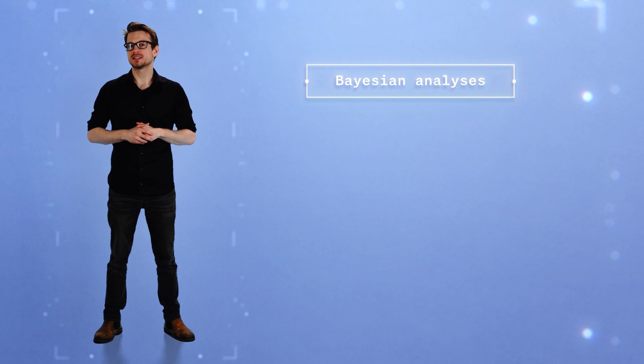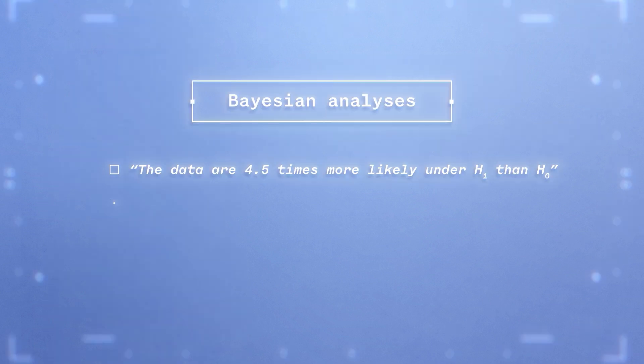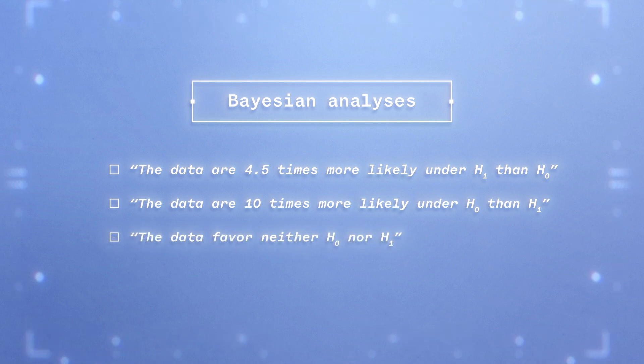Performing a Bayesian t-test also consists in pitting the null hypothesis against an alternative. Instead of taking a binary decision, a Bayesian t-test allows quantifying by how much some data are more likely to have occurred under one hypothesis than under the other. A typical result obtained with a Bayesian analysis is a statement such as: the data are 4.5 times more likely to have occurred under the alternative hypothesis than under the null hypothesis, or the data favor 10 times the null hypothesis over the alternative, or yet the data don't favor any of the two hypotheses.